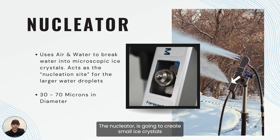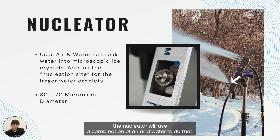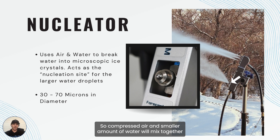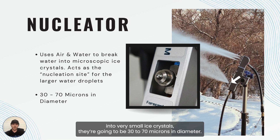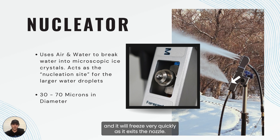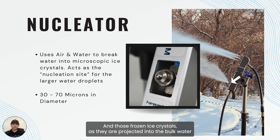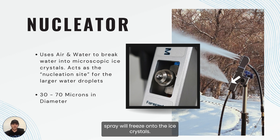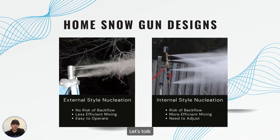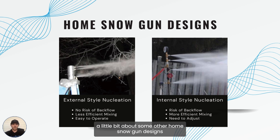The nucleator creates small ice crystals as nucleation sites for the bulk water spray, using a combination of compressed air and a smaller amount of water. These mix together in a nozzle or series of nozzles, shearing the water droplets into very small ice crystals — 30 to 70 microns in diameter — which freeze very quickly as they exit the nozzle and are projected into the bulk water spray.